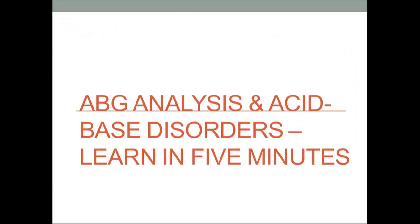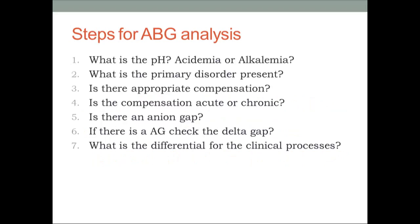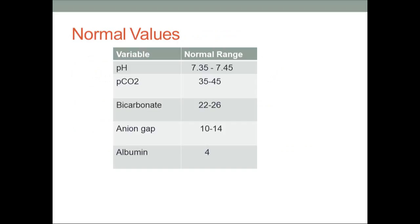Hello friends, today we are going to learn ABG analysis and acid-base disorders in just five minutes. We'll cover the following steps: what is pH and what is acidemia or alkalemia, then what are the primary disorders, then we'll calculate their compensation if present, whether it is acute or chronic, and we'll look at the anion gap and delta gap, and see what are the different clinical processes.